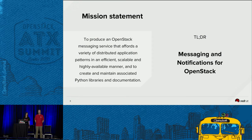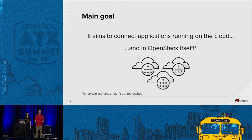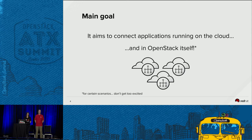What is Zakhar? Here we have the mission statement, but I'm going to give you the short version. Zakhar is the messaging and notifications service built for OpenStack and by OpenStack. The main goal is to connect applications running on the cloud and in OpenStack itself. There are several messaging alternatives, but Zakhar has been built to work on the cloud specifically — it is not like other messaging queues that have not been built with this use case in mind.